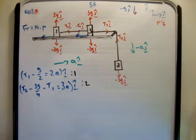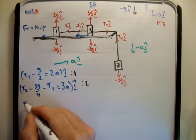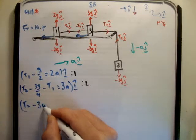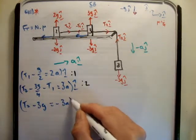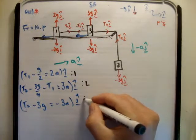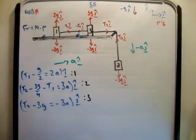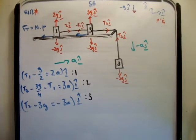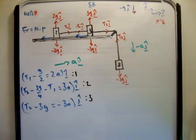And finally, if you look at the 3 kilo mass hanging over the side, you're just going to get that t2 minus 3g is equal to minus 3a. They're all in the j-hat direction. And I'm going to call that formula number 3. That's pretty straightforward. Now, I don't want to clutter the diagram any more than I have to, so just bear with me and I'll clean this up.